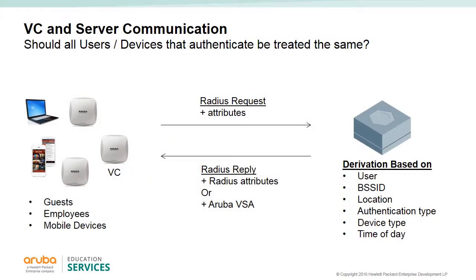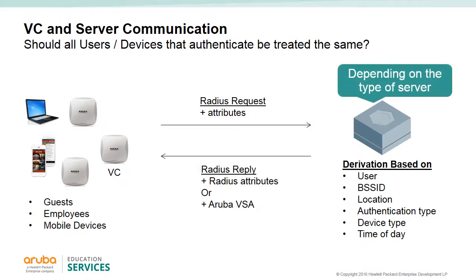For server-derived roles, there must be an exchange of information between the virtual controller and the server. What is sent depends on what type of server is being used and whether VSAs have been installed. The virtual controller sends attributes along with the RADIUS request message. This information can be used by the server to derive a role and reply with Aruba VSAs or RADIUS attributes. When Aruba VSAs are returned with the RADIUS reply, the virtual controller simply places the user in the specified role or VLAN.